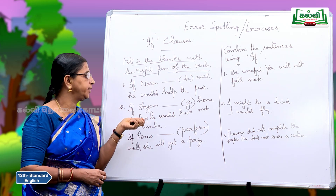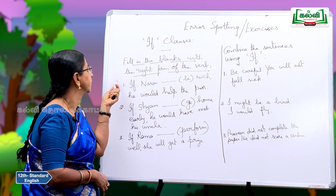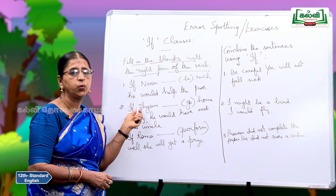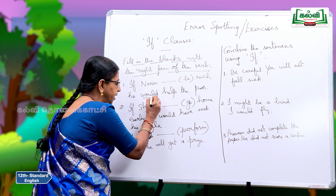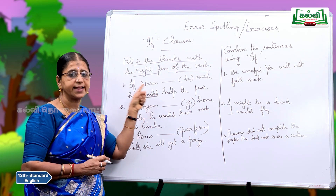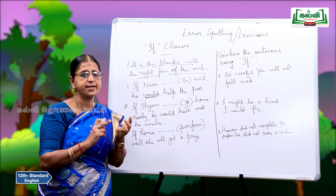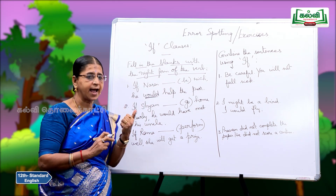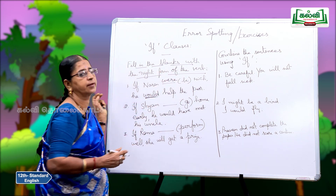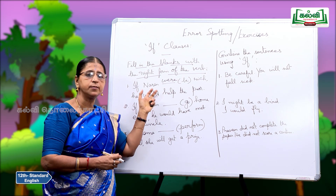Now fill in the blanks with the right form of the verb. If Naren dash rich, he would help the poor. Your clue is the main clause — 'would help' — so you must get the past form in the if clause. B forms of 'be' are: is, was, are, were, am. If Naren were rich, because he is not rich, he would help the poor.